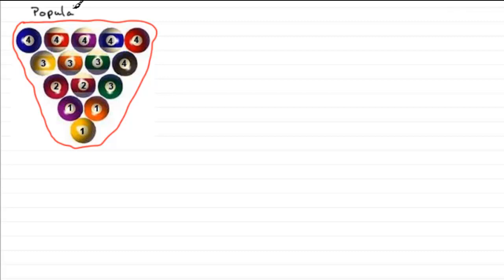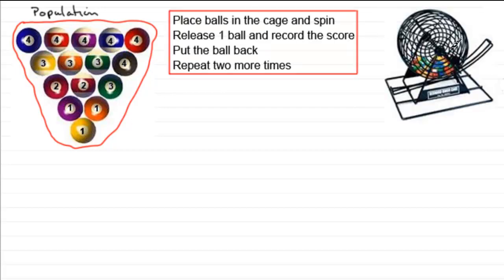And from this, if we were to take these balls and put them in a cage, something like this, and we were to spin the cage and then release one ball and record the score, put the ball back and then repeat this two more times, then what we would have would be a random sample of size 3. Three balls being taken and recorded.